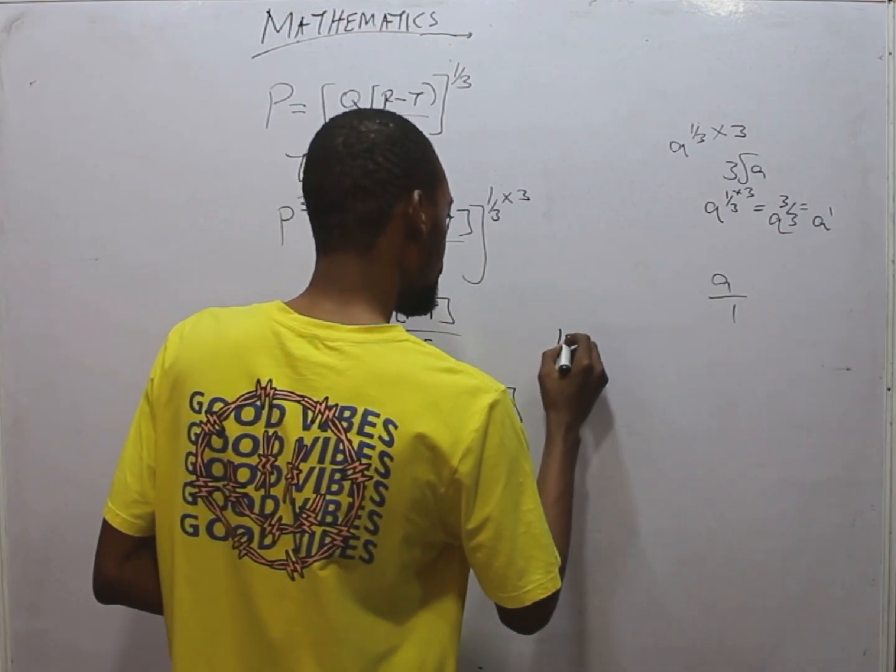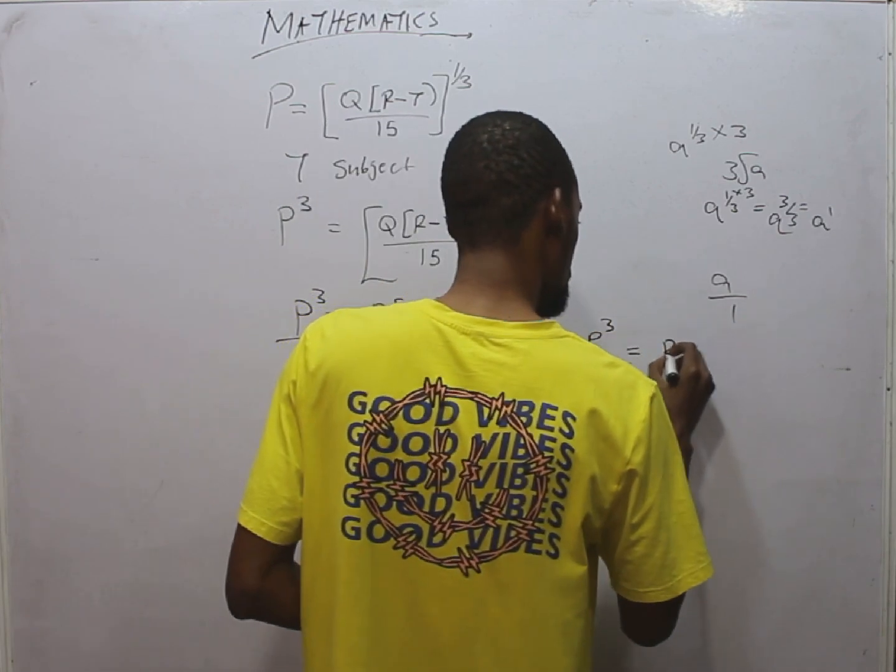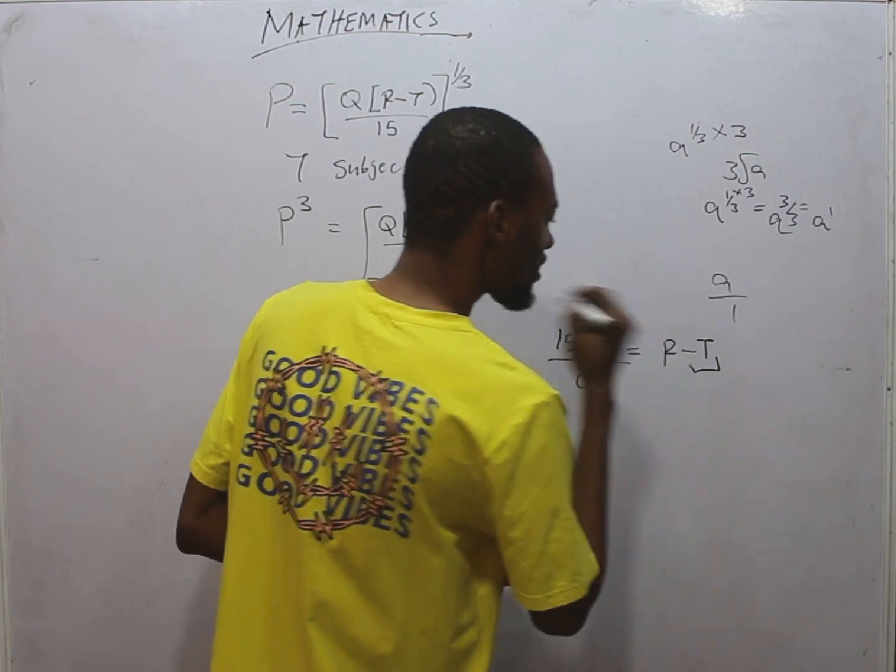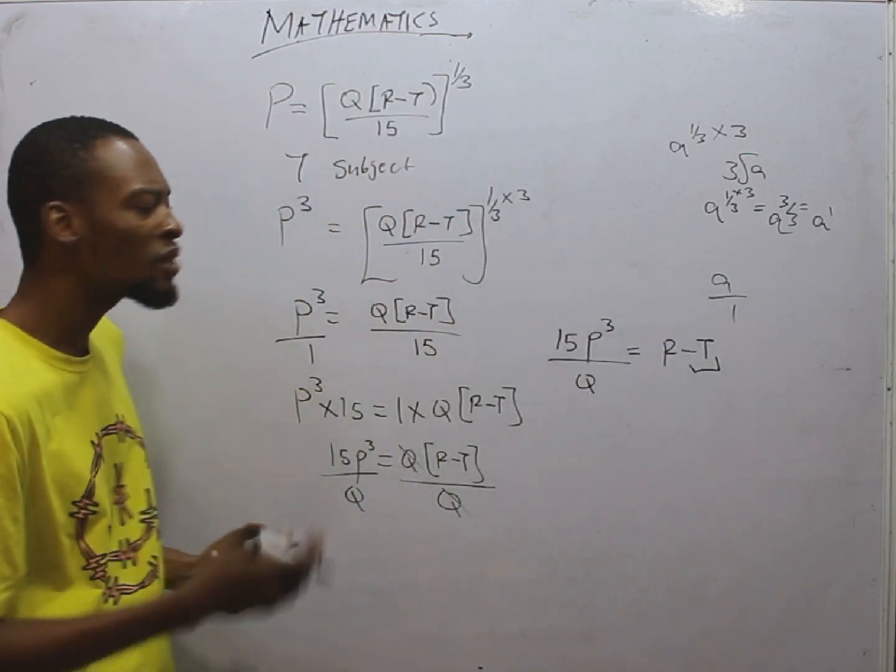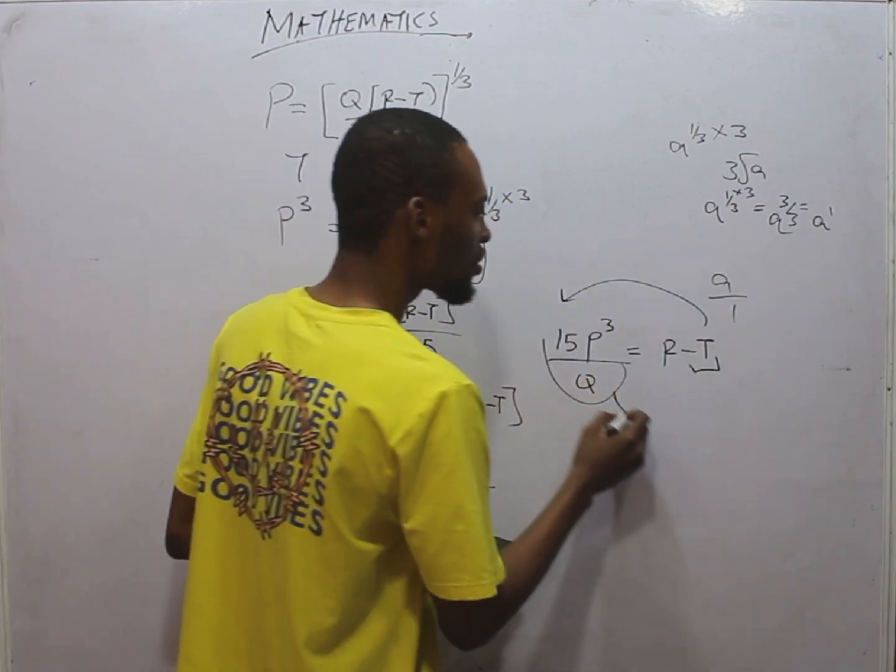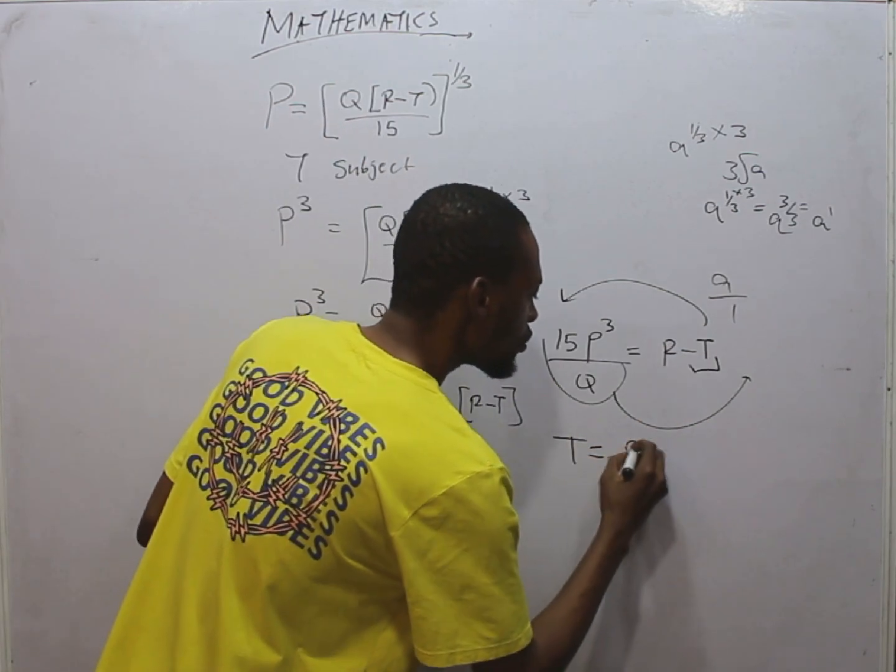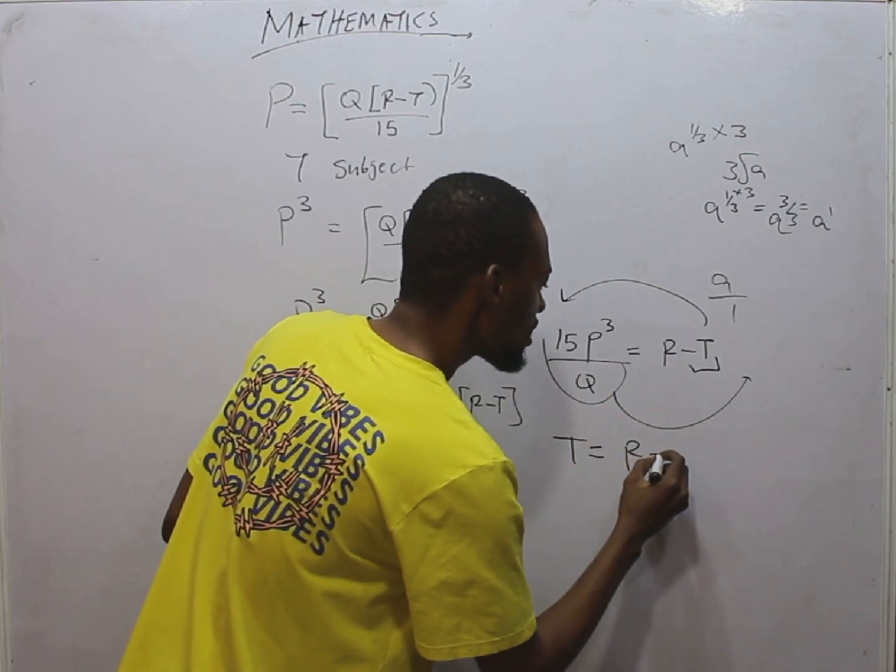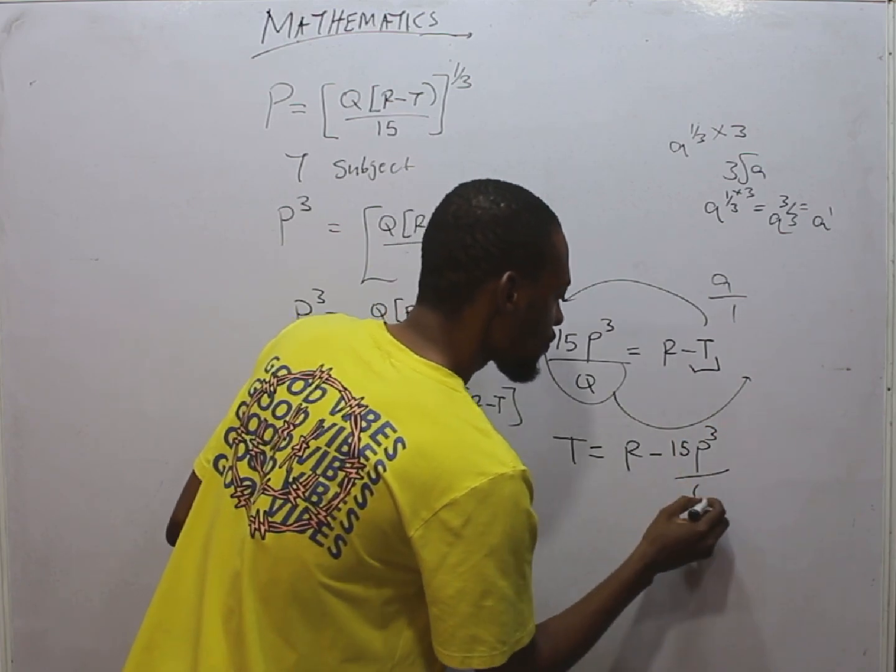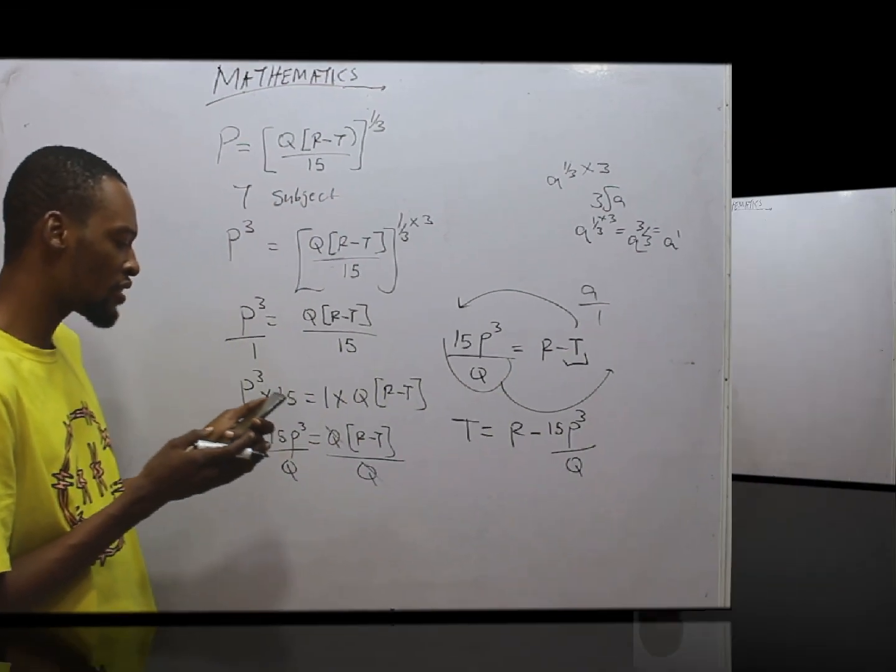This Q will simply cancel this Q. We are left with 15P raised to the power of 3 over Q equals R minus T. Now we are close. This is minus R, right? To do a smart work, we simply bring it to this side to become positive, and we take everything here to the other side to become negative. To have something like T equals R, which is already here, this becomes minus. So minus 15P raised to the power of 3 over Q. Remember, the division is only affecting here. R is already alone. So we made T subject formula.